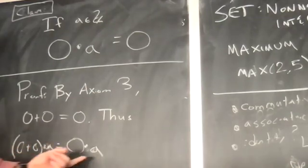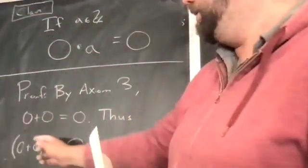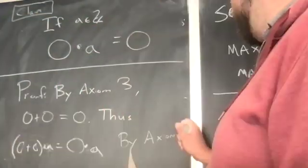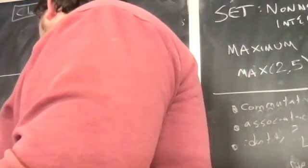If you multiply A by the same thing on both sides, it's still equal. I'm going to apply axiom 8 so that I can distribute this through. So with axiom 8, we have that 0 times A plus 0 times A.